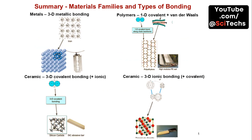Materials can be categorized into families like metals, polymers, and ceramics, each with distinct bonding types. Understanding these bonds helps in selecting the right material for various applications.